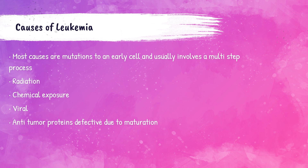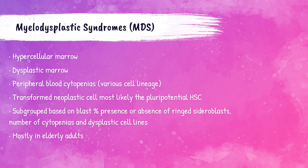Most leukemias are caused by mutations in the cells. Some can be caused by radiation — for example, when a patient with a different type of cancer undergoes radiation treatment, increasing the risk for future leukemia development. Certain chemical exposures can cause it, some studies show links to certain viruses, and defective anti-tumor proteins can also lead to leukemia.